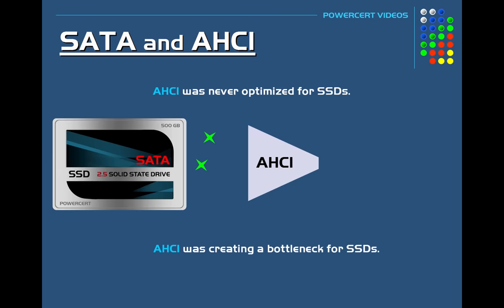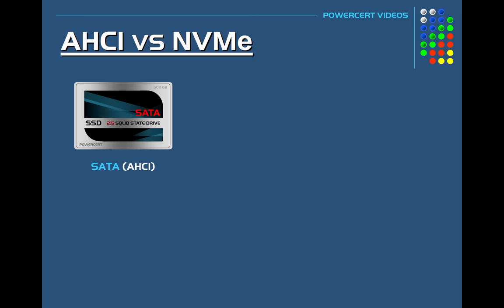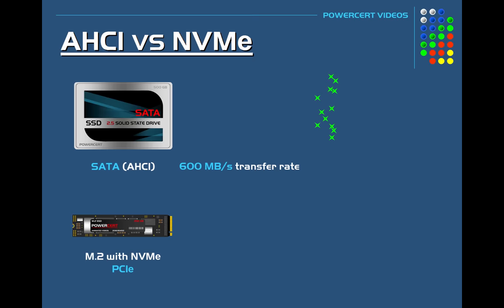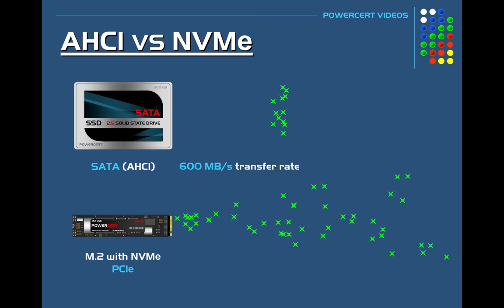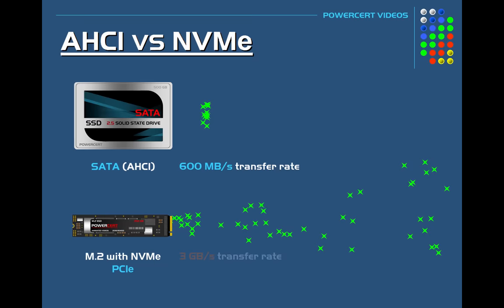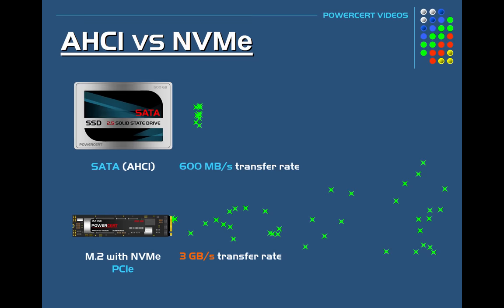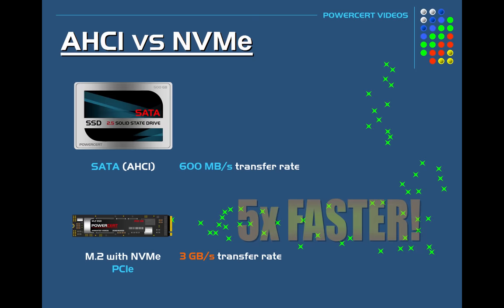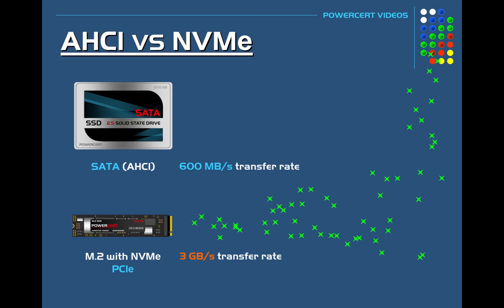The SATA 3.0 bus with AHCI allows data transfer speeds at a theoretical rate of 600 megabytes per second, which is pretty fast. However, M.2 NVM Express SSDs do not use the SATA 3.0 bus — they instead use the PCI Express bus, which is much faster. By using the PCI Express bus with an optimized protocol like NVM Express, SSDs can transfer data at a rate of 3 gigabytes per second. That makes M.2 SSDs with NVM Express roughly five times faster than SATA and AHCI, and regardless of the specific motherboard or SSD, it's still far faster than SATA SSDs.